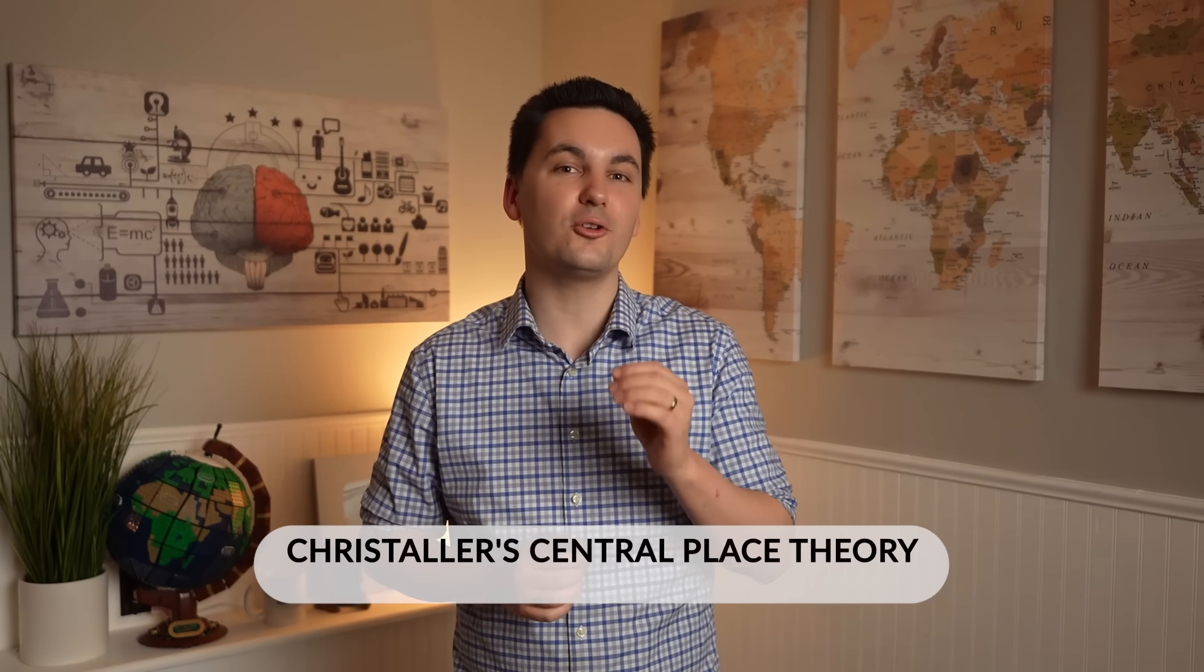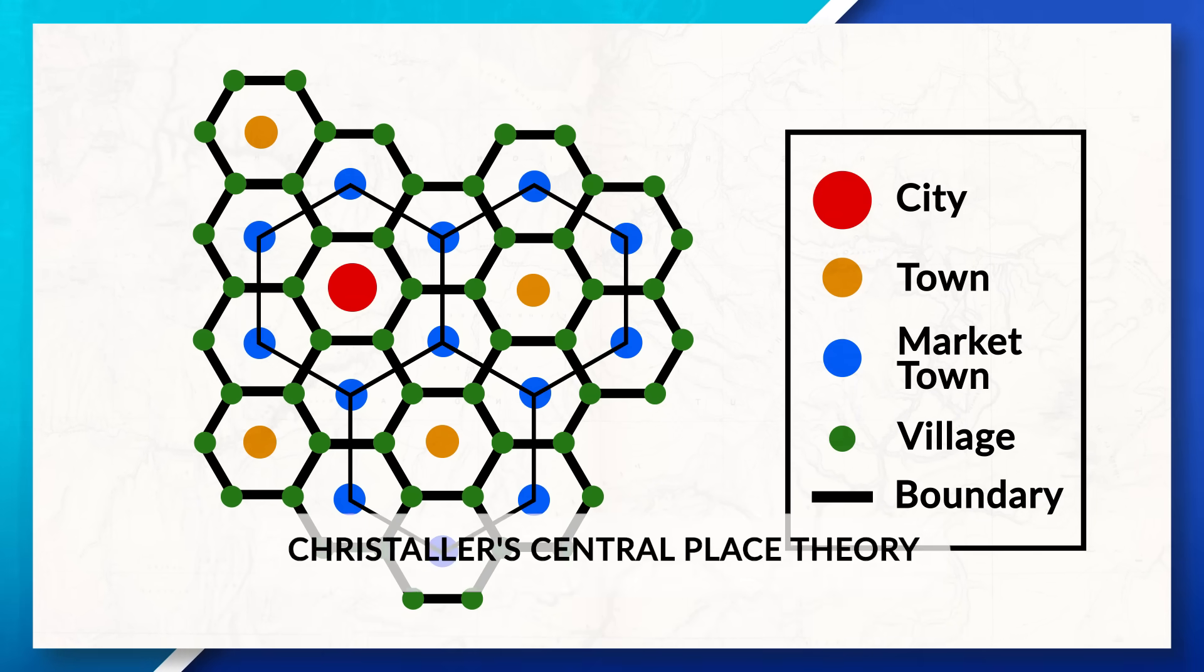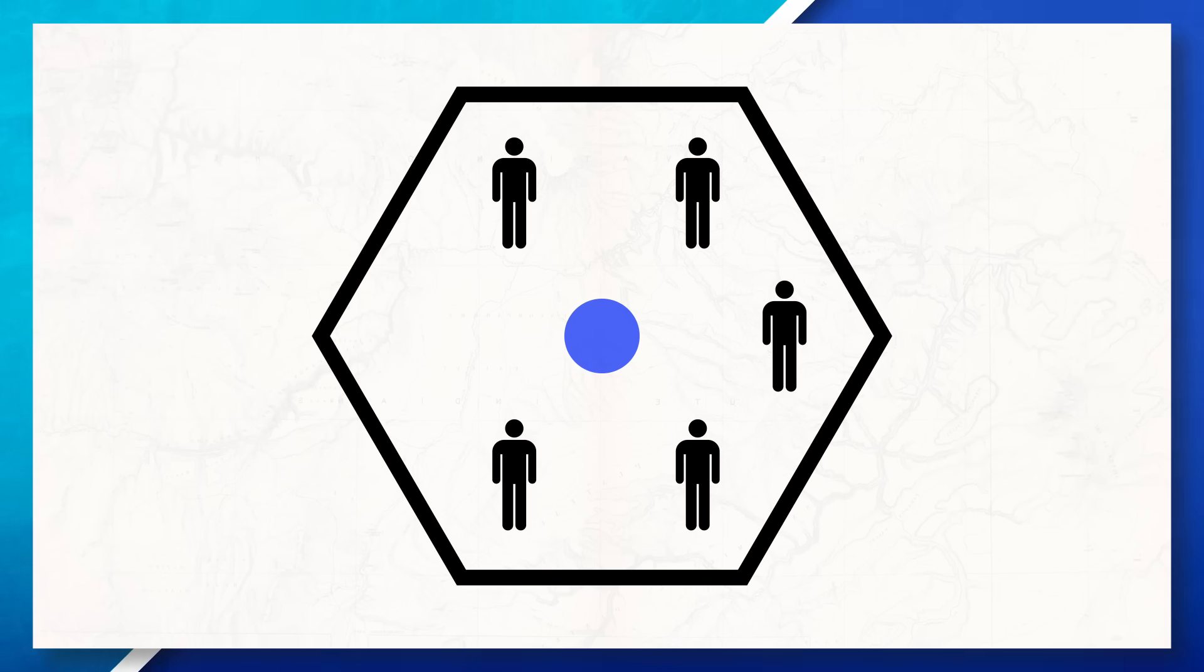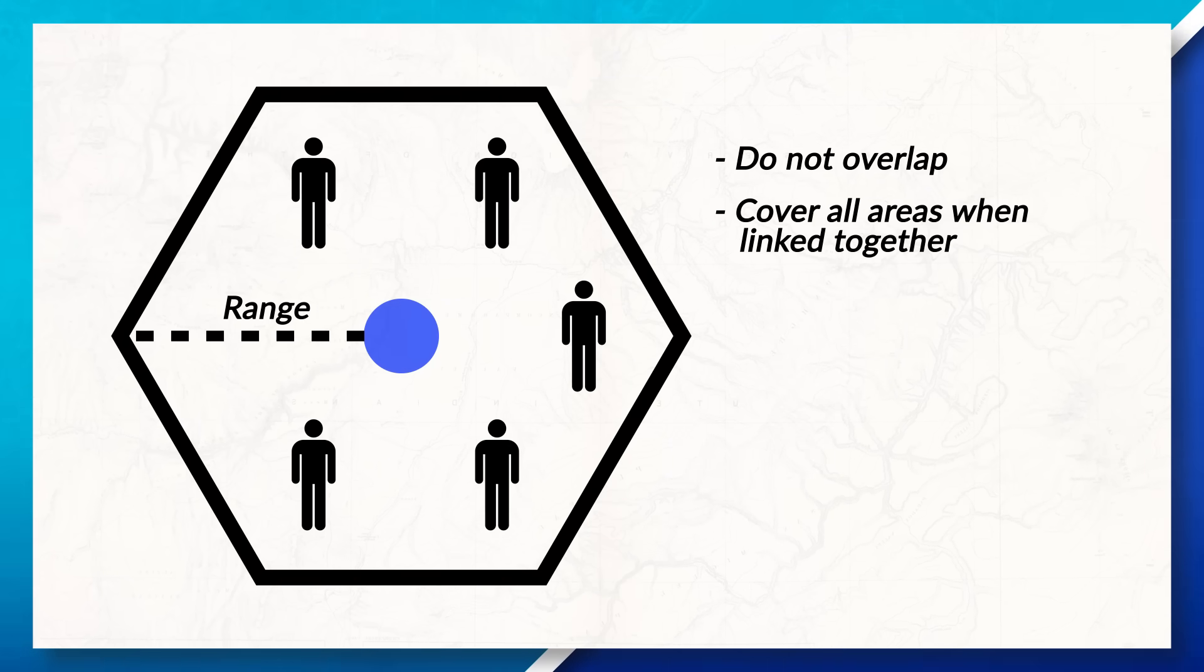So now that we understand the gravity model, let's change gears and look at Christaller's central place theory, which is a theory that seeks to explain the distribution and pattern of different cities and towns based on their size. When looking at the central place theory, we can see a variety of different hexagons which allows us to better understand the spatial distribution of different settlements. Now in order to help you understand the model, let's first break down one of the hexagons so you can have a better understanding of what is happening in the model. Each hexagon represents an area that is served by a central point, traditionally a settlement or business. The central place theory uses hexagons because they do not overlap and when they are linked together they cover all areas.